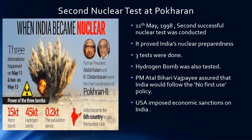On 11th May 1998, India carried out its second nuclear test to prove its nuclear preparedness. Three tests were done on this day; one of them was of the hydrogen bomb. Prime Minister Atal Bihari Vajpayee assured that there would be no first use of nuclear weapons by India. However, the USA imposed economic sanctions on India immediately after.